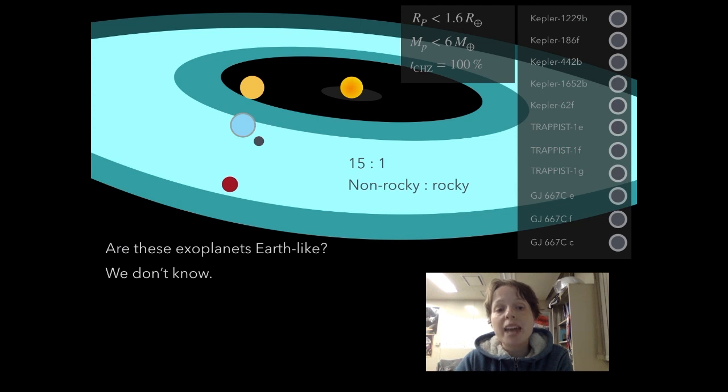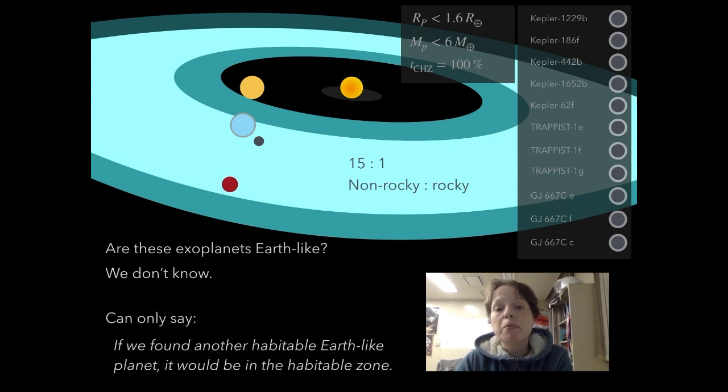The only thing we can say is that if another habitable Earth-like planet is out there, it would be in the habitable zone. But being in the habitable zone does not mean you're Earth-like enough for life.